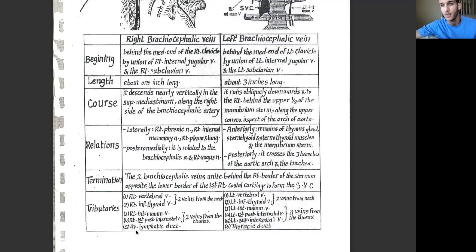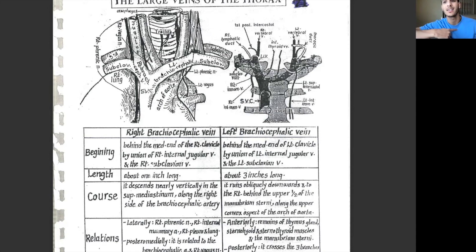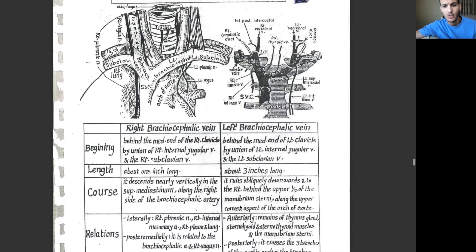For the left brachiocephalic vein, it begins behind the medial end of the left clavicle by the union of the left internal jugular vein and the left subclavian vein. It is about three inches long — longer because it extends towards the right side. It runs obliquely downwards to the right, behind the upper half of the manubrium sterni, along the upper convex aspect of the arc of the aorta.